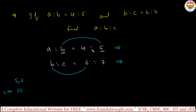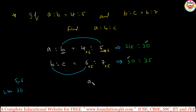Take the LCM of 5 and 6, which is 30. Multiply the first ratio 4:5 by 6 on both terms to get 24:30. Multiply the second ratio 6:7 by 5 on both terms to get 30:35. Now the b values are both 30 and match. So a is to b is to c equals 24 is to 30 is to 35.